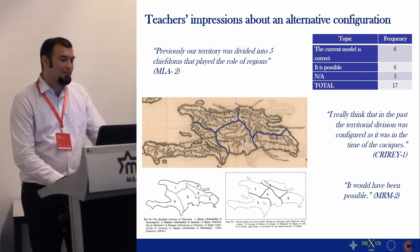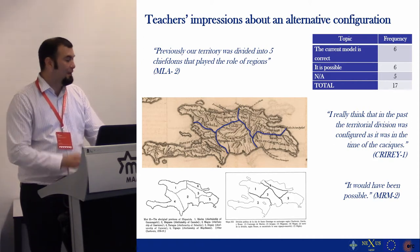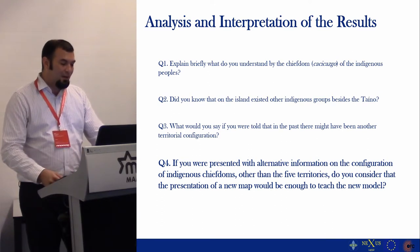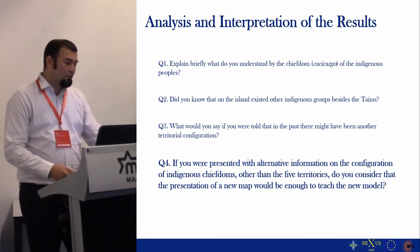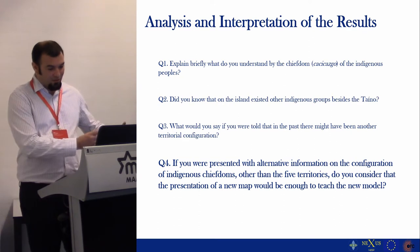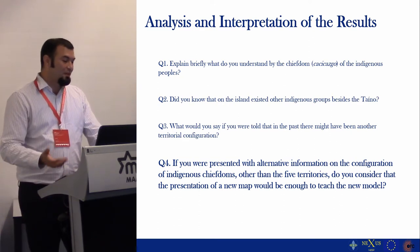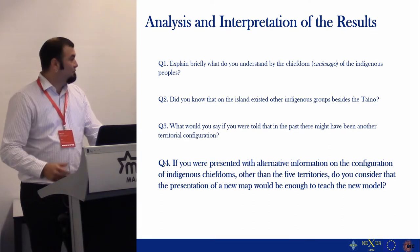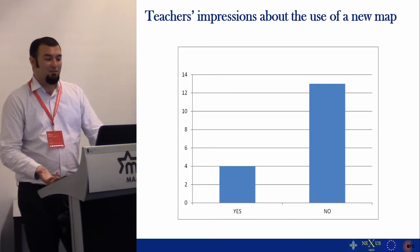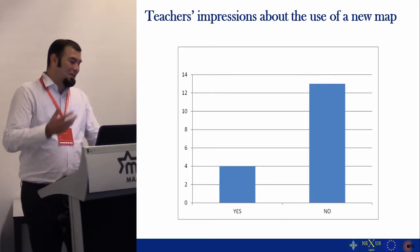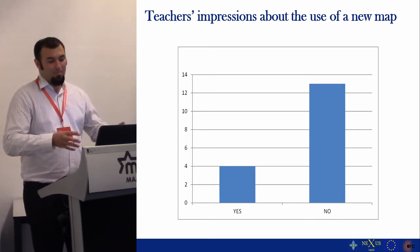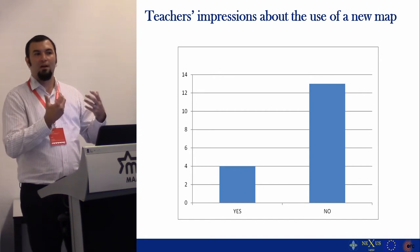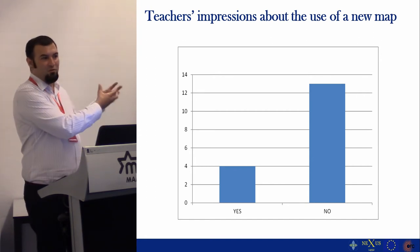This led us to our final question: if presented with alternative information on the configuration of chieftain identity or the five territories, would a new map be enough to teach the new model? Most teachers said no, which is quite interesting considering that most of the information they hold and reproduce is actually based on a map.